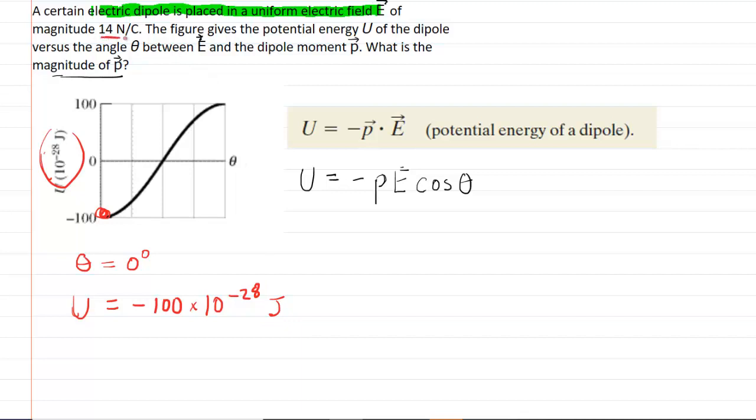Furthermore, the question notes that the magnitude of the electric field is 14 newtons per coulomb.